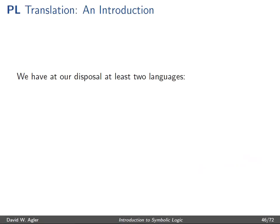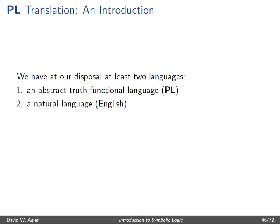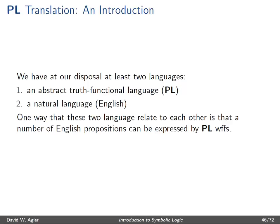Essentially, we have two languages at our disposal. We have an abstract, truth-functional language like the language of propositional logic — a set of symbols that are interpreted in terms of truth and falsity and their functions — and a natural language like English. One way that these languages can be understood in relationship to each other is in terms of translation. That is, we can look at some English sentences or propositions and see how they might be expressed in the language of propositional logic, and vice versa.